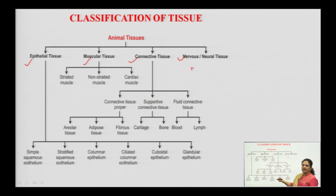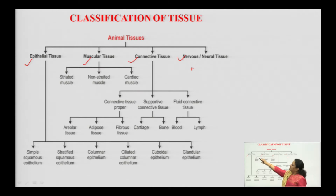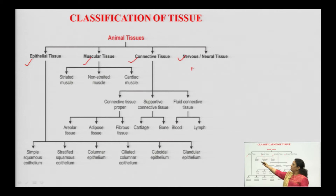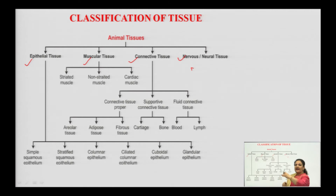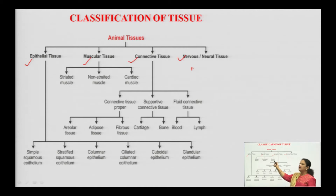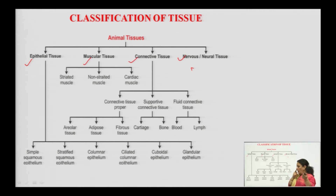Muscle tissue has three subtypes: striated muscles, non-striated muscles, and cardiac muscular tissue — the muscles covering our heart, the circulatory system organ. Striated means different colored bands or layers. Cardiac muscle is also known as myocardial or cardiac smooth muscle cells.